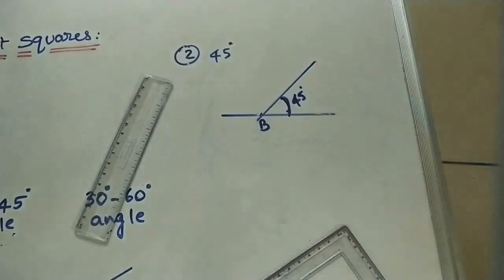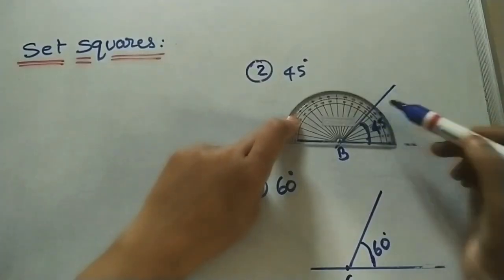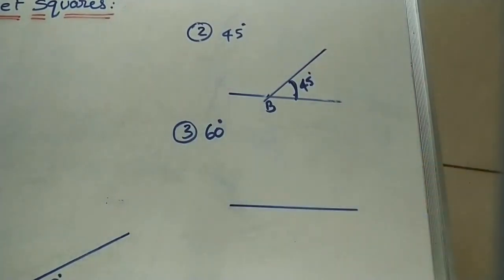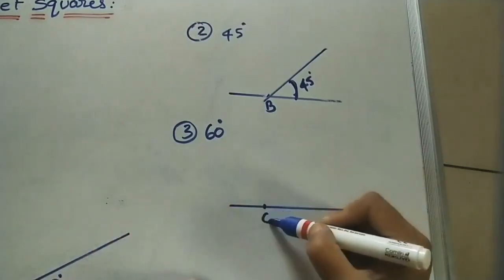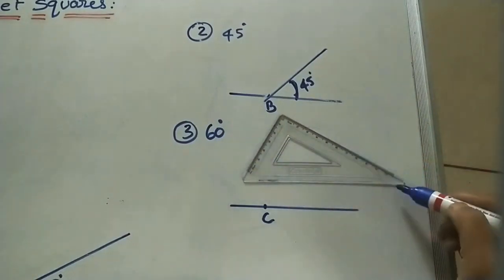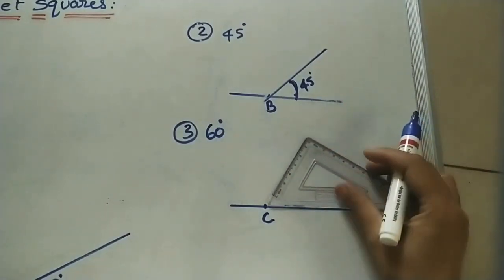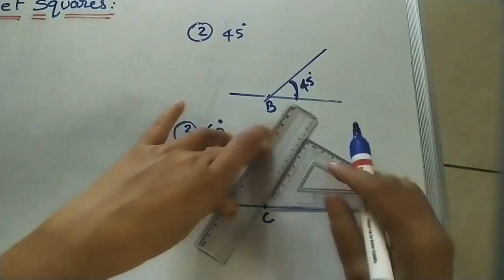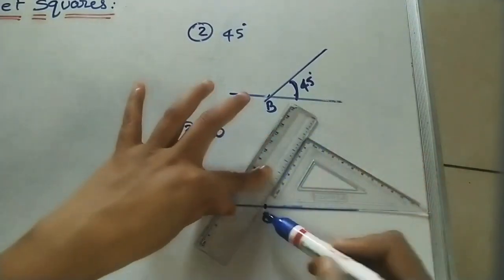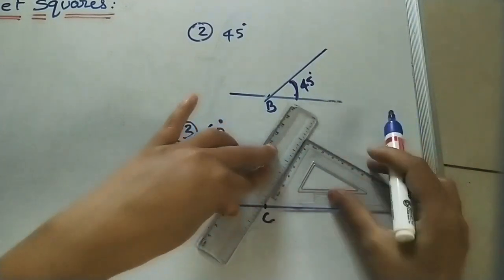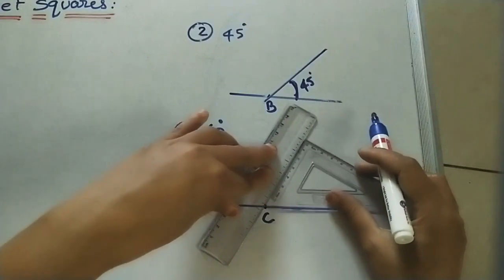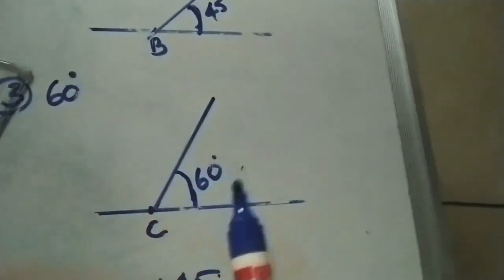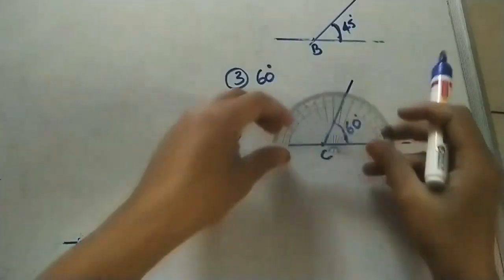Next, mark 60 degrees. Draw a line and, using the set square, mark 60 degrees at point C. This is the 60-degree angle and this is the 30-degree angle. Keep it near C, place the scale so this side coincides with the line and the slope line coincides with the scale, passing through C. If it is not passing, tilt and adjust. Draw the line and you will get 60 degrees at point C. Check — this angle is 60 degrees.